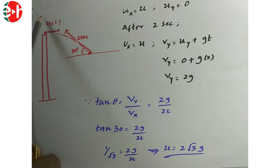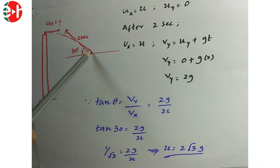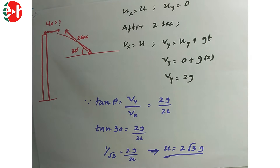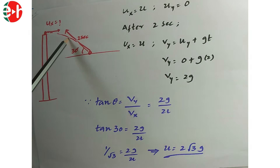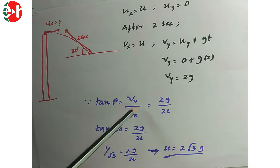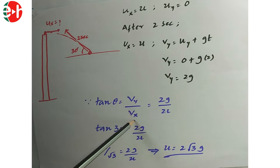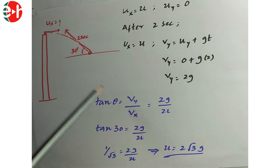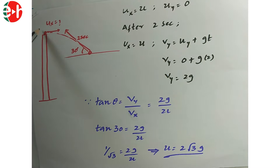An object is thrown horizontally from a certain height. After 2 seconds it makes 30 degrees to the horizontal. The question asks for the velocity of projection Ux. Using tan θ = Vy/Vx, our target is to find Vx, which is the final velocity along the x-axis — equal to the initial velocity of projection.